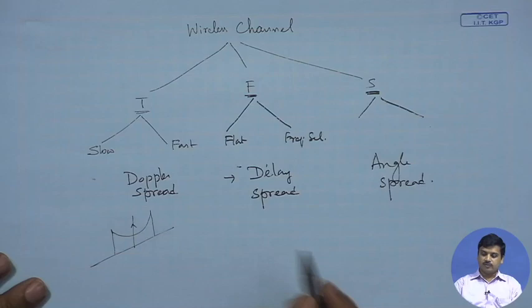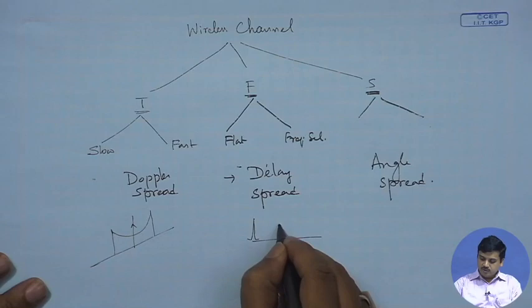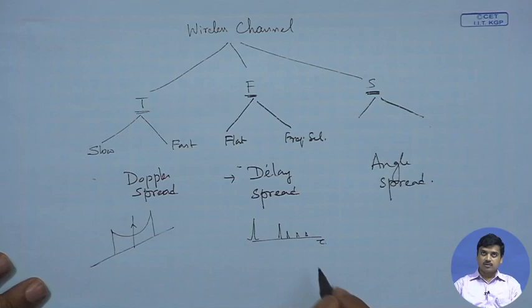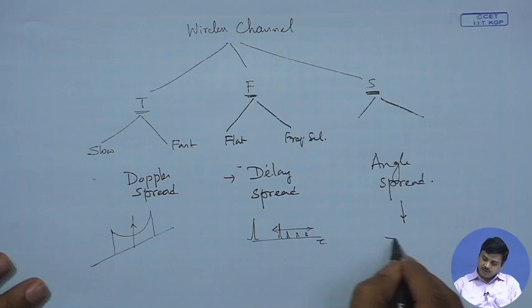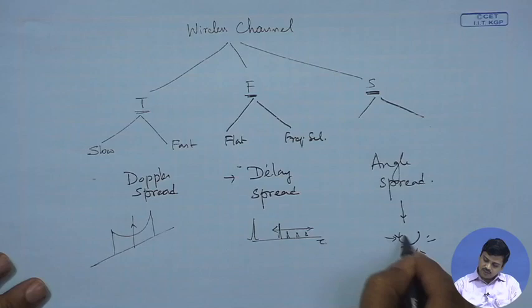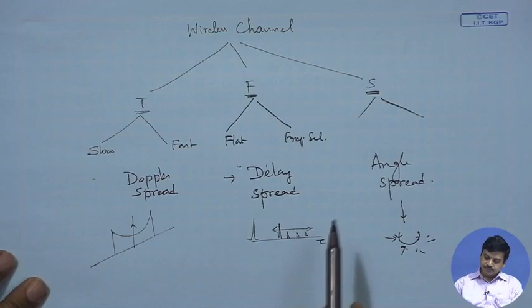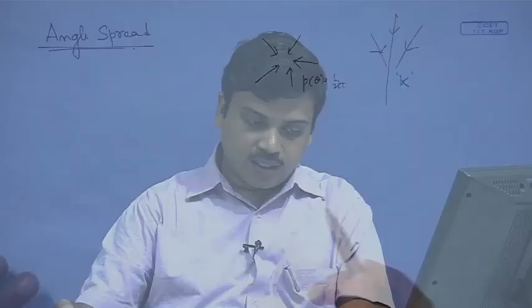In the delay domain, when a delta function was transmitted, what was received were echoes spread along the delay axis, giving delay spread. Similarly in the spatial domain, even though transmission may come from one direction, scattering from multiple directions produces an angular spread of the received signal. These three — Doppler spread, delay spread, and angle spread — describe the channel in time, frequency, and spatial dimensions respectively.